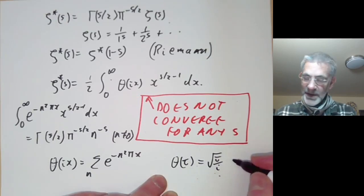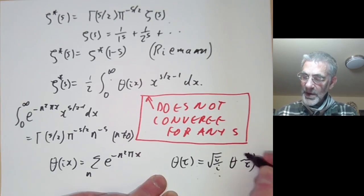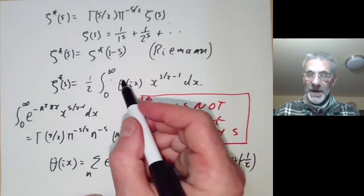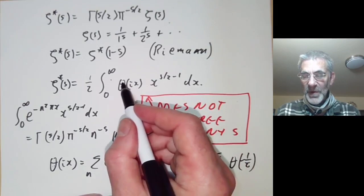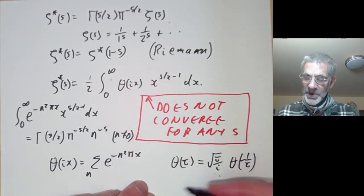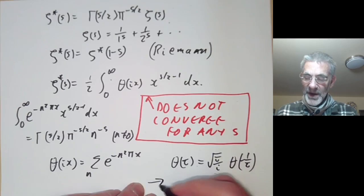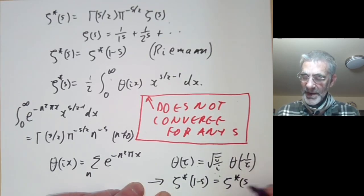We have the transformation formula for the theta function: theta of tau equals root tau over i times theta of minus 1 over tau. Sticking this functional equation into the formula for zeta-star of s in terms of theta and doing a simple change of variable easily gives you zeta-star of 1 minus s equals zeta-star of s.